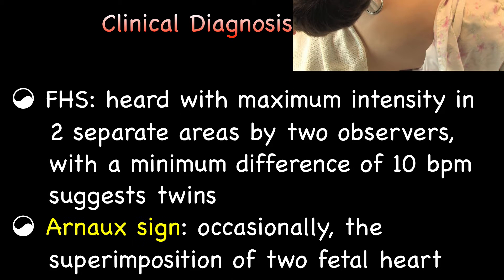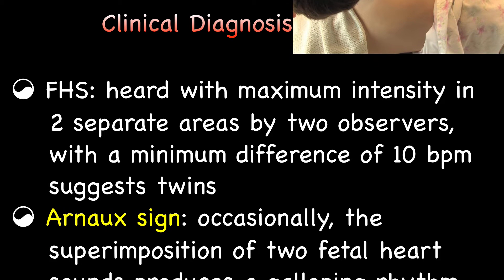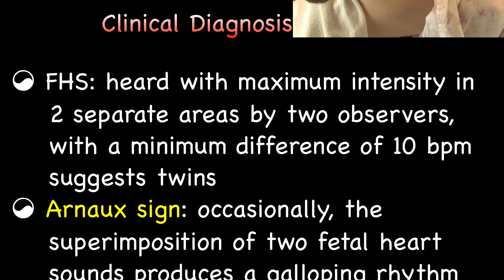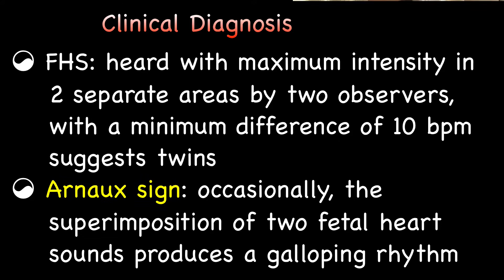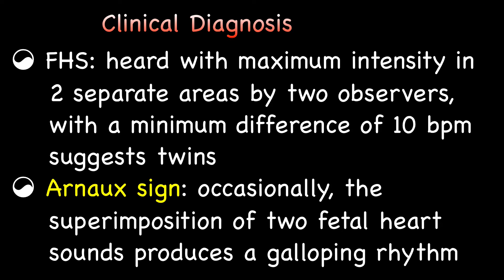However, this is not practical and never used for diagnosis of twins in the modern era. Occasionally, the superimposition of two fetal heart sounds produces a gallop rhythm; this is known as Arnock's sign, which is more useful for diagnosis.